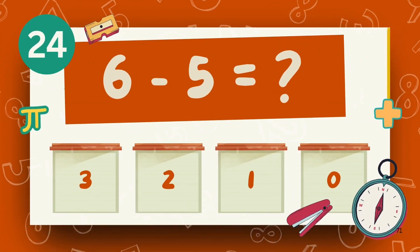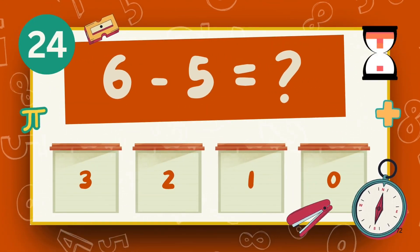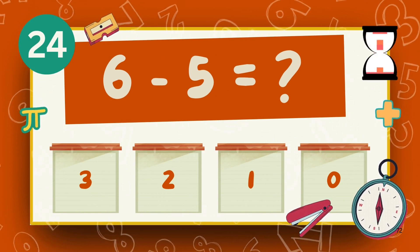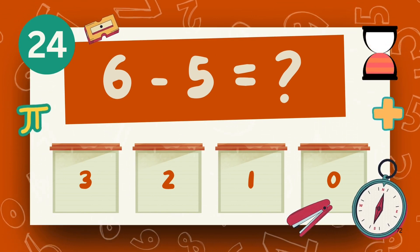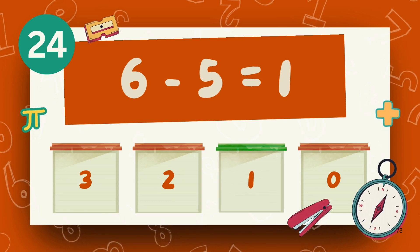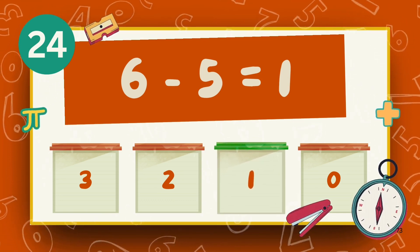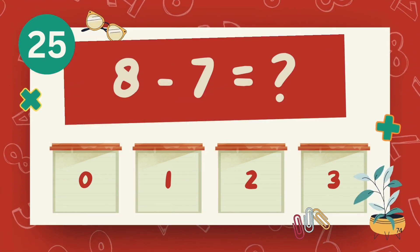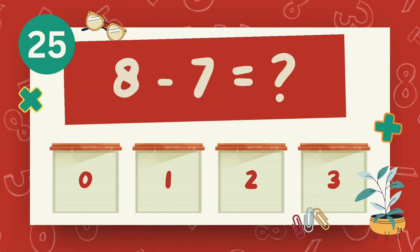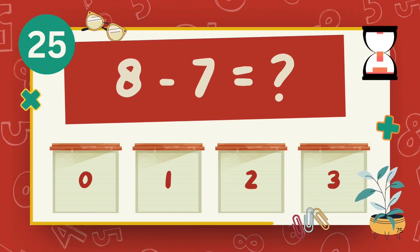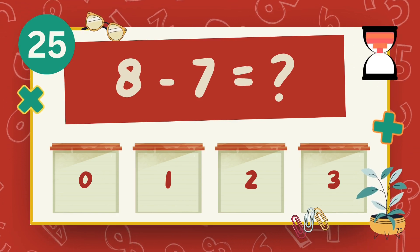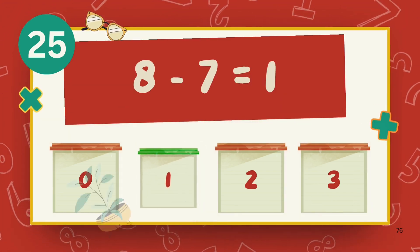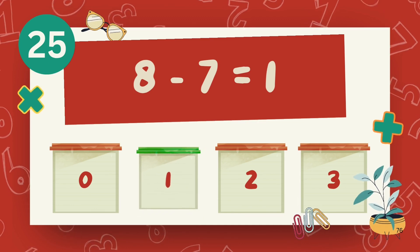What is 6 minus 5? The answer is 1. What is 8 minus 7? The answer is 1.